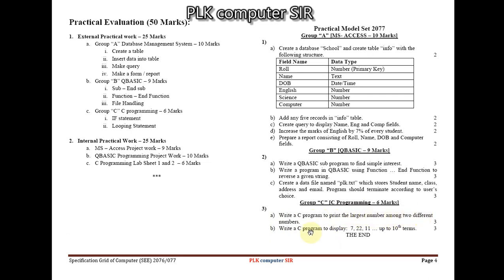Group B Q Basic questions: a sub program to find simple interest, a function to reverse a given string, and a file handling question — create a data file 'plk.txt' storing student name, class, address, and email, with the program terminating based on user choice. Group C C programming: write a C program to print the largest number among two different numbers (if statement), and write a program to display 7, 20... up to 10 terms (looping). Attempt only one.